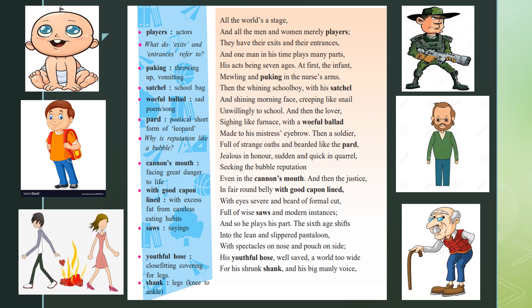This poem is taken from the play written by William Shakespeare called As You Like It. It is a monologue recited by Jacques while playing a character in the play. The poem talks about the world being a stage, meaning life is compared to a stage where human beings are compared to players or actors, and life and death are compared to the entries and exits of a play. Every man has their own role to play in the world, and there are seven stages mentioned in the poem, each with its own uniqueness and peculiar qualities.